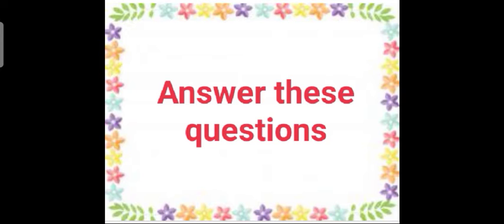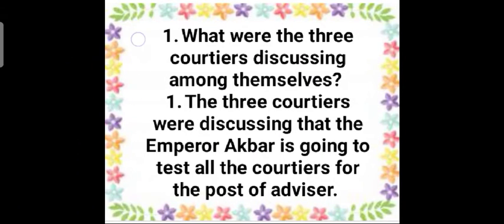Now let us answer these questions. Your first question is, what were the three courtiers discussing among themselves? The answer is, the three courtiers were discussing that the Emperor Akbar is going to test all the courtiers for the post of advisor.